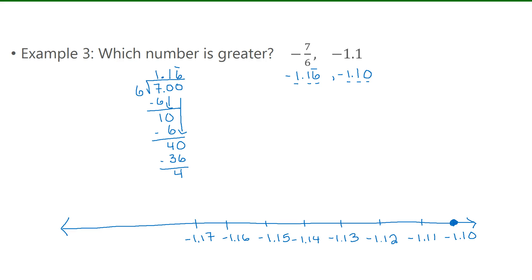and negative 1.16, let's say we're roughly here. So negative 1.16 is here, so negative 1.6 repeating would be just over halfway there. So since negative 1.1 is further to the right on the number line, that one is greater.